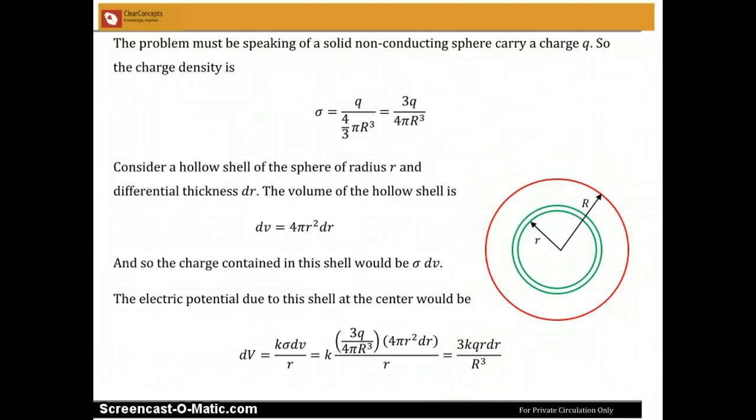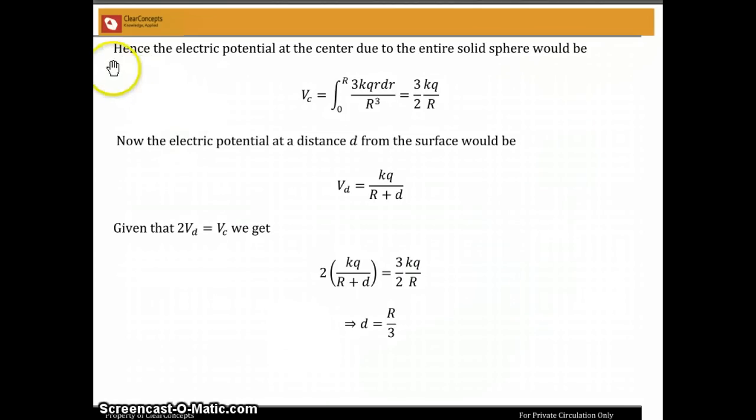So this is due to this green hollow shell and we need to now integrate it between the limits 0 and capital R. So the electric potential at the center would be that integral and we're calling it V subscript c for the center. And when you integrate it, you get 3 by 2 kq by capital R.